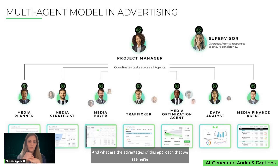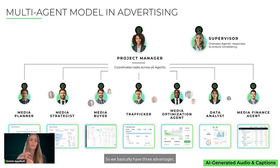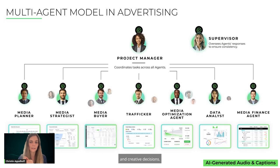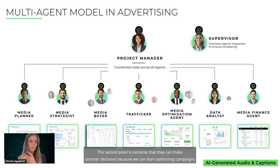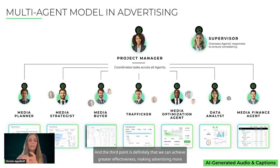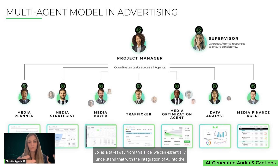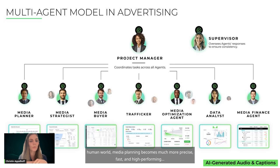This approach has three key advantages. First, we are faster and more efficient — automating repetitive tasks gives professionals more free time to focus on strategic and creative decisions. Second, smarter decisions become possible because we can optimize campaigns in real time thanks to data. Third, we achieve greater effectiveness, making advertising more strategic and high-performing. As a takeaway, with the integration of AI into media planning, the process becomes much more precise, fast, and high-performing.